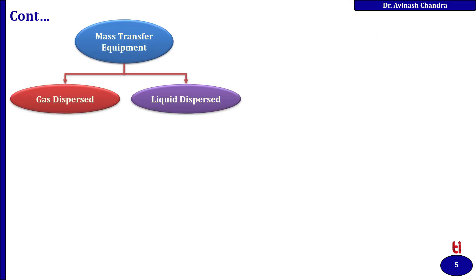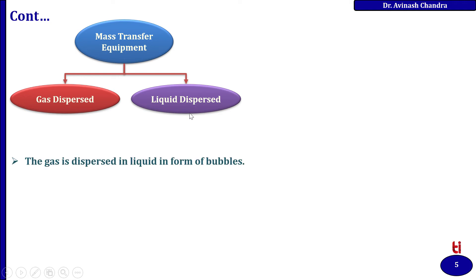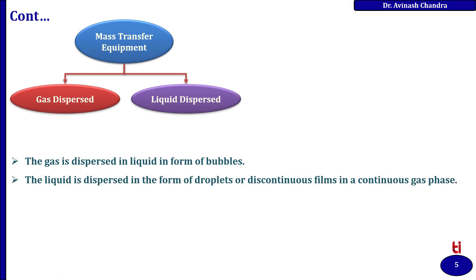If we classify the mass transfer equipment, there are two types: one is gas dispersed and the other is liquid dispersed. The gas is dispersed in liquid in the form of bubbles, and the liquid is dispersed in the form of droplets or a discontinuous film in a continuous gas phase. Sometimes both gas and liquid phases are continuous.